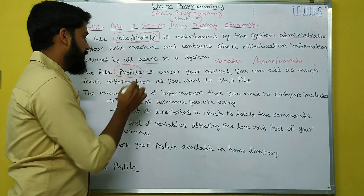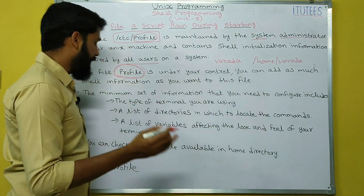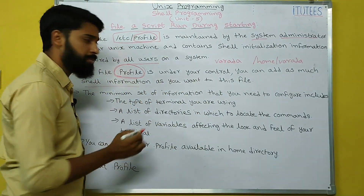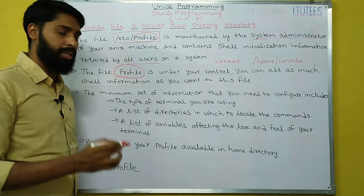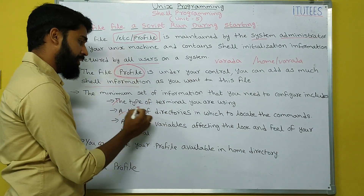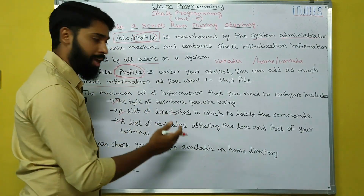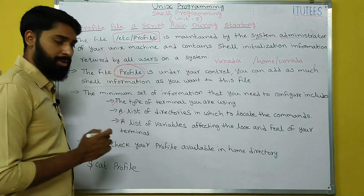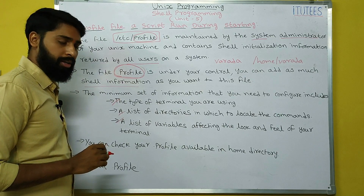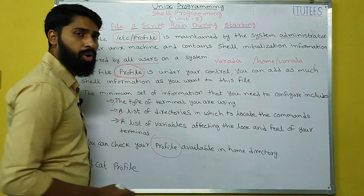In the home directory there is a file dot profile which is under your control — you can add as much shared information as you want to this file. The minimum set of information you need to configure includes: the type of terminal you are using, a list of directories in which to locate commands, and a list of variables affecting the look and feel of your terminal. These are the three things you are going to modify using dot profile.